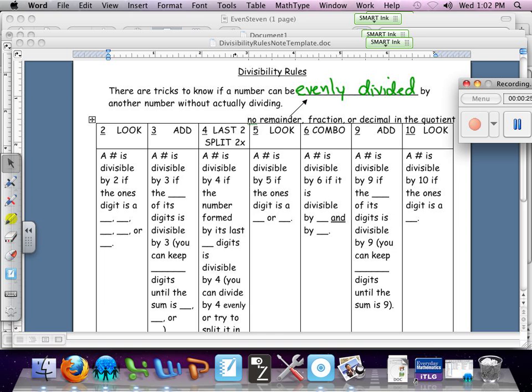Someone asked, does evenly divided mean it needs an even quotient? No, no, no. It just means it's going to be a whole number answer if you did the division. There would be no remainder, no fraction, or decimal in the quotient if you look down below with that arrow.